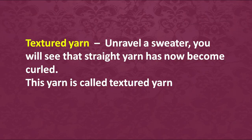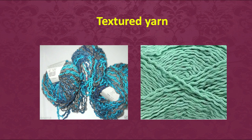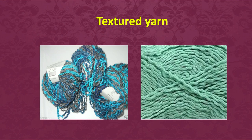Textured yarn: when you unravel a sweater, you see the yarn is not straight — it has a twist, a crimp effect, or forms loops. If held free, it takes some sort of a curl. That shows it is a twisted yarn, called a textured yarn. Texturizing is another treatment given to yarn — it can be done mechanically but also chemically to impart texture to the yarn.